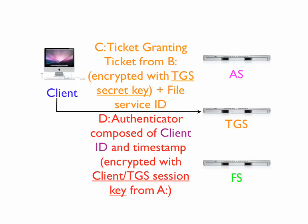The client sends two messages to the ticket-granting server. Message C is the ticket-granting ticket received from the authentication server earlier — encrypted with the TGS secret key — along with the ID of the service it wants, which in this case is the file service ID. It also sends message D, which is an authenticator composed of the client ID and a timestamp, encrypted with the client-TGS session key from message A.